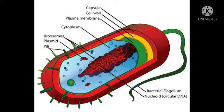The second function is that the plasma membrane has enzymes for the biosynthetic pathway of compounds like peptidoglycan, teichoic acid, polysaccharide, lipopolysaccharide, and phospholipids. These molecules can be used for cell wall synthesis.